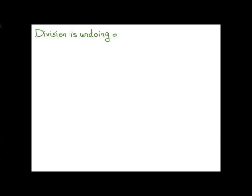Now let's look at division. Division is the undoing of multiplication. Mathematicians, every time we do something, we want to look at how we can undo it. So in the case of multiplication, the undoing of this is division.